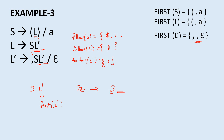Since epsilon is in first(L'), we apply it. In the production L → Y L', applying epsilon gives L → Y, with no other symbol after Y, so follow(Y) also includes follow(L) = {)}. Applying epsilon on L' in S → L means we also need follow(L) for S. So follow(S) = {$, comma, )} — dollar because it is the start symbol, comma from first(L'), and right parenthesis from follow(L).